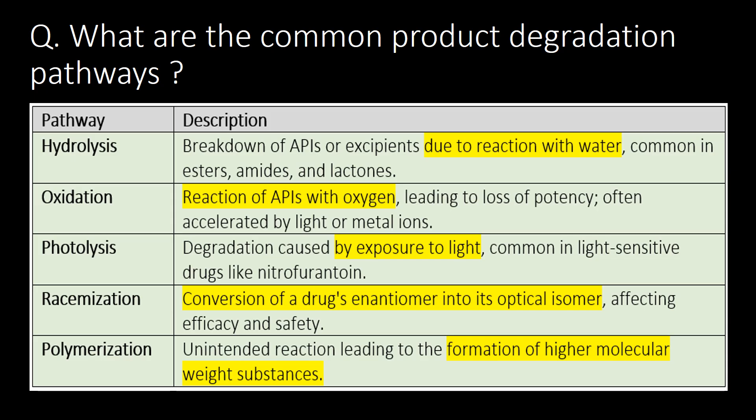Third type: photolysis — degradation caused by exposure to light. Fourth: racemization — conversion of a drug isomer into its optical isomer. And fifth: polymerization — unintended reactions leading to the formation of higher molecular weight substances.